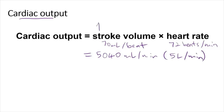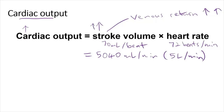When stroke volume increases, cardiac output will also increase. Stroke volume depends on venous return, which is the amount of blood returning to the heart via the veins. For example, during exercise, skeletal muscles contract and need more oxygen. Skeletal muscle contraction increases venous return, which increases stroke volume, and the result is an increase in cardiac output because the heart pumps even more blood to supply oxygen to the muscles.